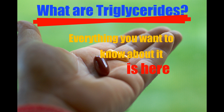Once the triglycerides have been broken down, the chain lengths of the fatty acids in naturally occurring triglycerides can be of varying lengths, but 16, 18, and 20 carbons are the most common. Natural fatty acids found in plants and animals are typically composed only of even numbers of carbon atoms due to the way they are biosynthesized from acetyl-CoA.